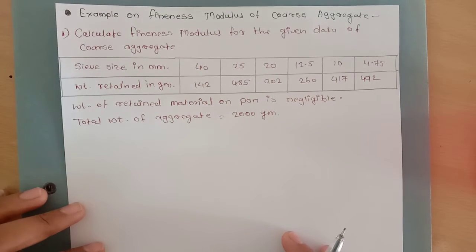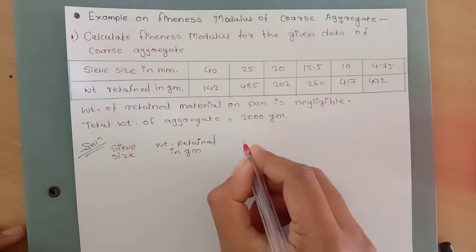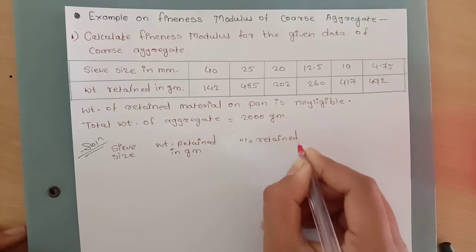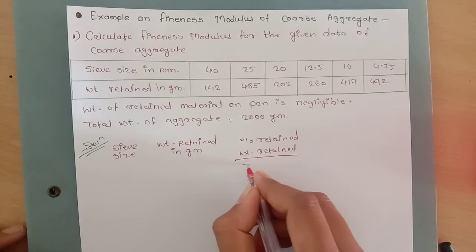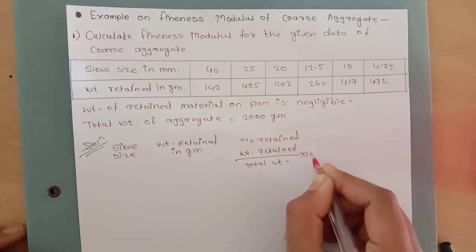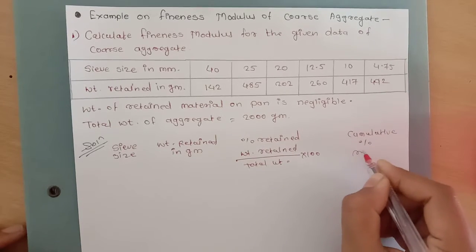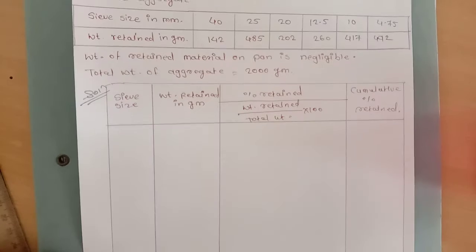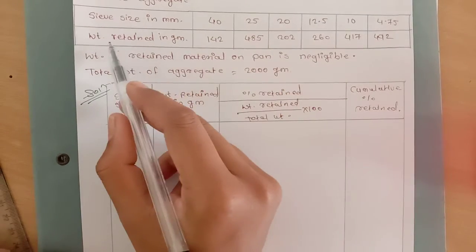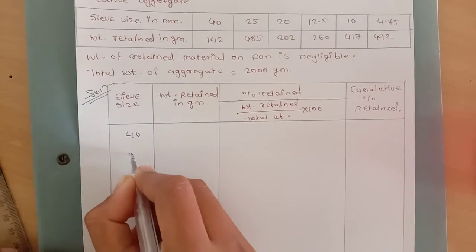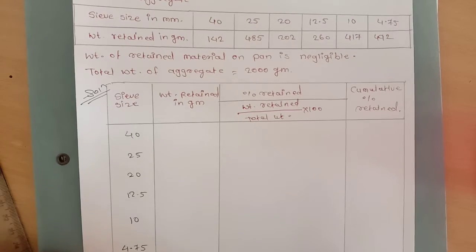From this given data we will calculate the fineness modulus. The solution begins by drawing a table. The table is ready. We put the given values — sieve sizes and weight retained in grams. The sieve sizes are 40, 25, 20, 12.5, 10, and last 4.75 mm.